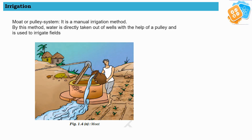Let us first talk about the moat or pulley system in irrigation. It is a manual irrigation method. By this method, water is directly taken out of a well with the help of a pulley and used to irrigate the field. As we can see here, the farmer takes out water from the well using a pulley and puts it into a channel where the water flows towards the crop. This system is known as the moat or pulley system and is completely manual.